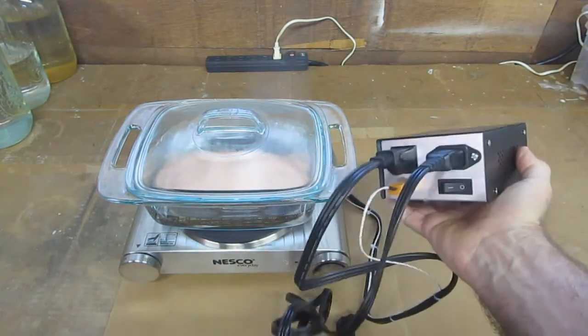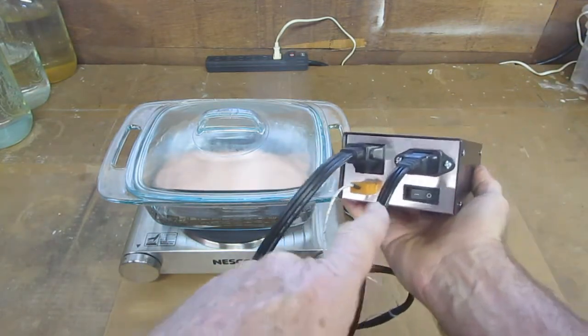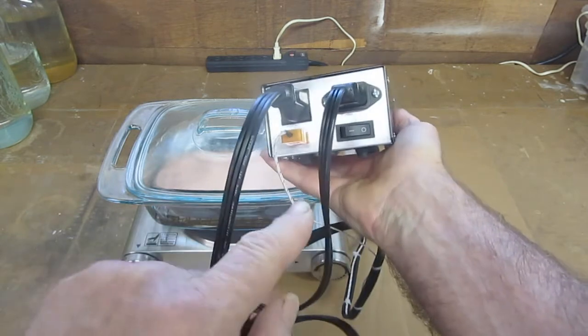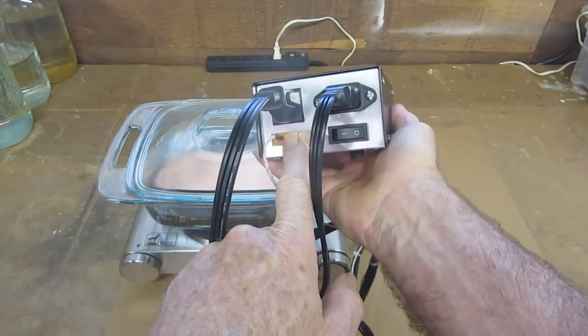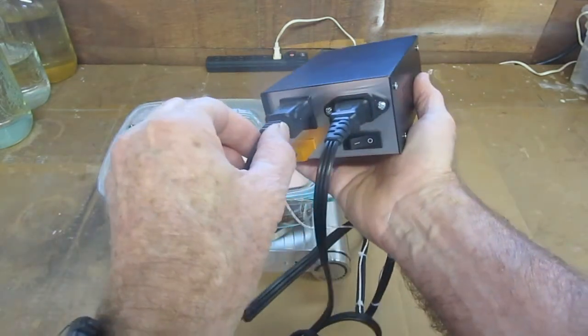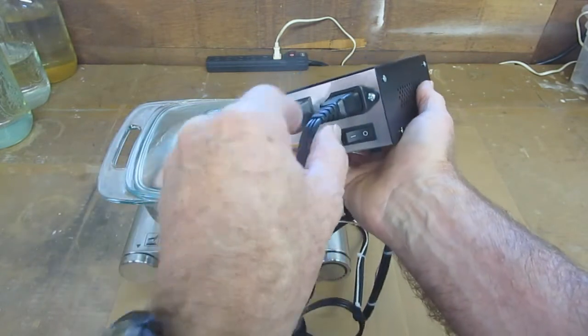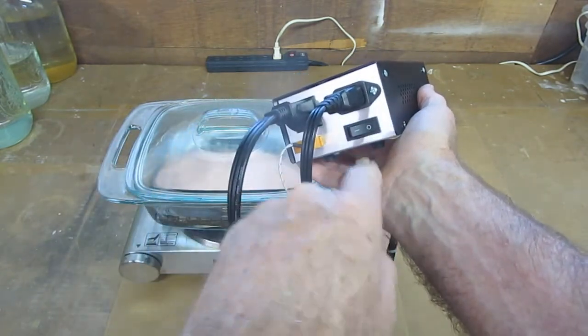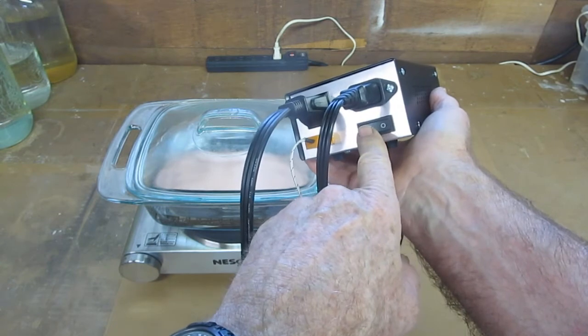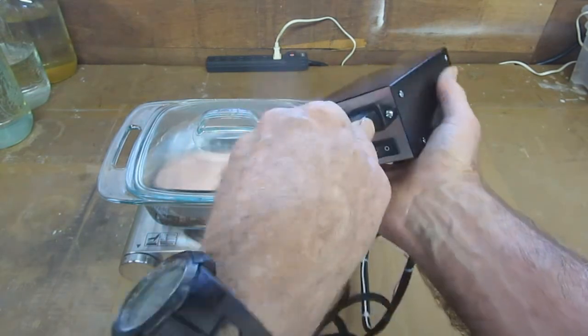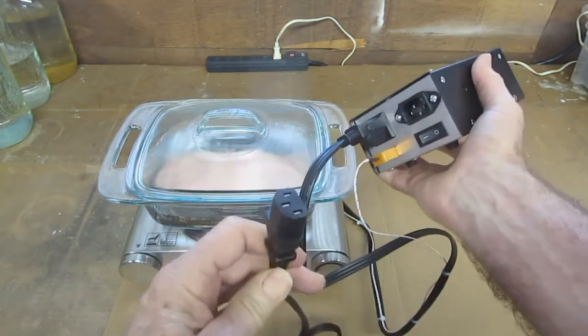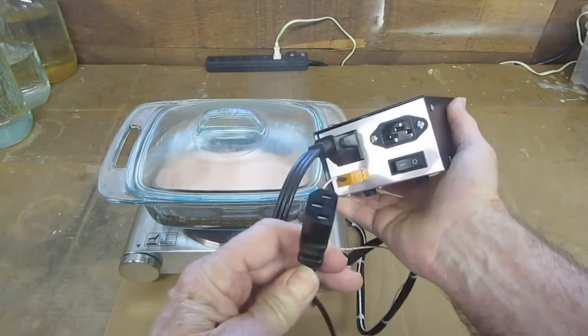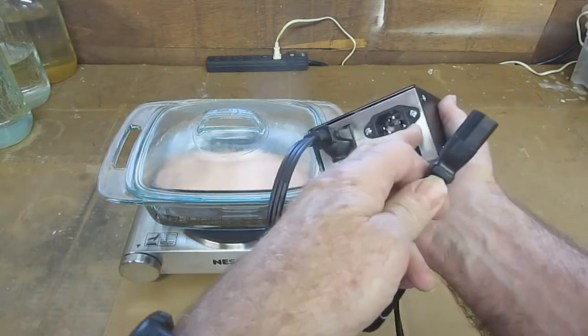There's where the thermocouple plugs in, this is where the hot plate plugs in, this is the power cord, and this is an on-off switch. The power cord is just a standard IEC power cord.